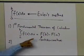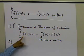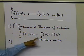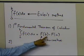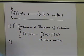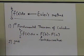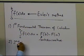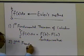So if the uppercase F is the antiderivative of the function f, then when you integrate from a to b, you're simply going to get the value of the antiderivative at b minus the antiderivative at a. The other thing which you have to realize, in order to see how Euler's method or other methods can be used to solve integrals, is the second fundamental theorem of calculus.